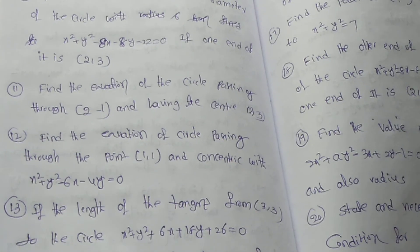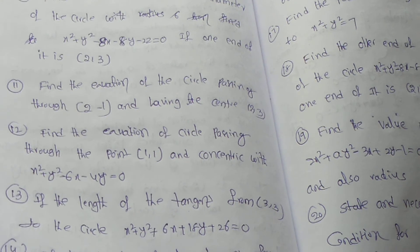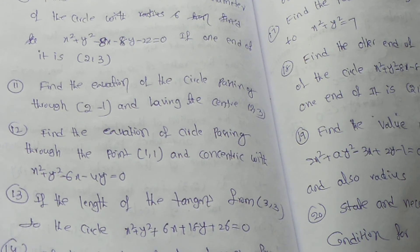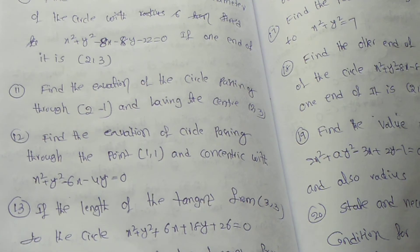Twelfth question: Find the equation of the circle passing through the point (1, 1) and concentric with x square plus y square minus 6x minus 4y equal to 0.